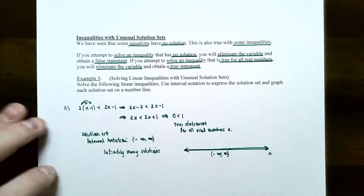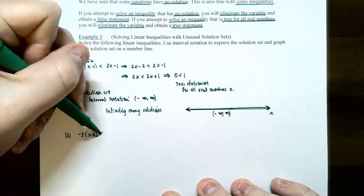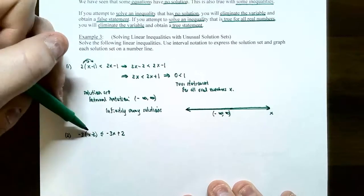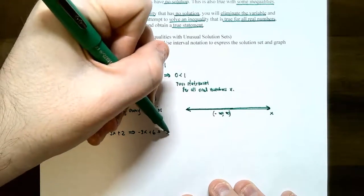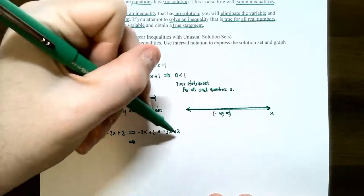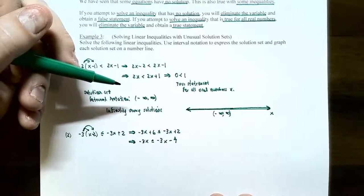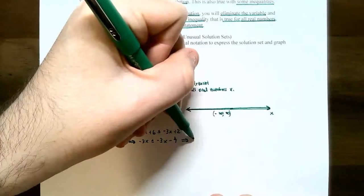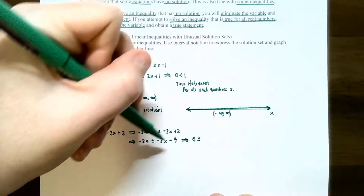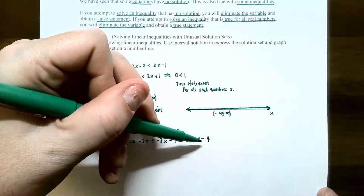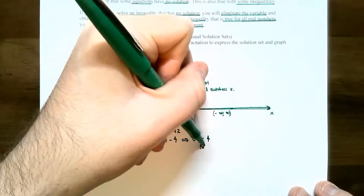Let's try a different problem. Number two: negative 3 times the quantity (x minus 2) is less than or equal to negative 3x plus 2. Distribute negative 3: you get negative 3x plus 6 is less than or equal to negative 3x plus 2. Subtract 6 from both sides: negative 3x is less than or equal to negative 3x minus 4. Add 3x to both sides: negative 3x plus 3x gives 0, less than or equal to negative 4. Well, 0 is not equal to negative 4, nor is 0 less than negative 4 — 0 is greater than negative 4, so this is a false statement for all real numbers.